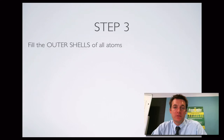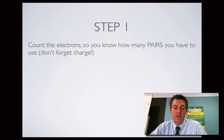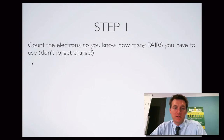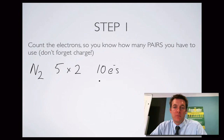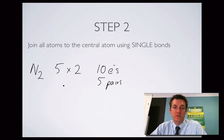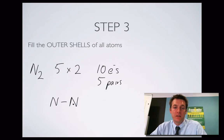N₂ is the next example, so back to step one. We need to count the electrons. Nitrogen is in group five, and we have N₂ — a nitrogen molecule made of two nitrogen atoms — so two times five gives ten electrons, which is five pairs. Step two is to join all the atoms. There isn't a central atom, so we join them together using a single bond. Then we fill the outer shells of all the atoms.